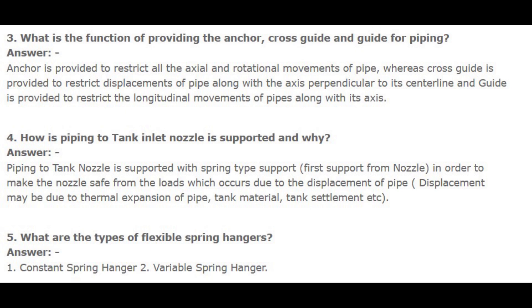Number 3. What is the function of providing the anchor, cross-guide, and guide for piping? Answer: Anchor is provided to restrict all the axial and rotational movements of pipe, whereas cross-guide is provided to restrict displacements of pipe along the axis perpendicular to its centerline, and guide is provided to restrict the longitudinal movements of pipes along its axis.